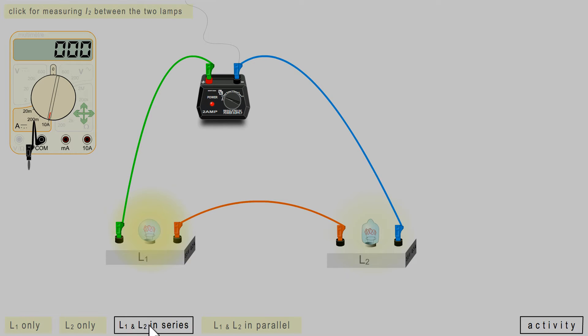First activity. We will measure the intensity at 3 different places of this loop as requested in the instructions. If I measure the current at the output of the power supply, I must disconnect the wire which is there and connect the black probe.